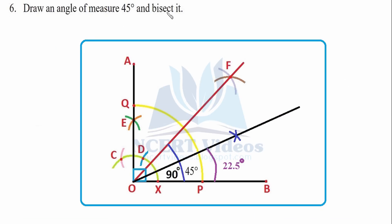Question 6: Draw an angle of 45 degrees and bisect it. First draw 90 degrees, then take its angle bisection to make 45 degrees. From the arc where it cuts the red line, and from point P draw arcs with the same radius — you can also use another radius. Wherever it cuts will be your bisection. We cut 45 degrees into two equal halves of 22.5 degrees each.